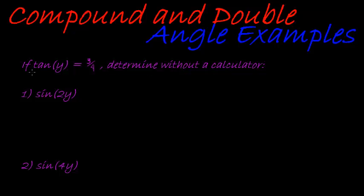Okay, in this example, we're given that tan of y is equal to 3 over 4, determined without a calculator, sine of 2y and sine of 4y. So again, if we're given that a ratio is equal to a constant, it's really very simple. You just go and draw a triangle using that information and then work from there.